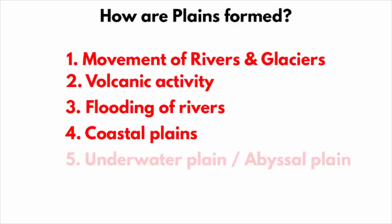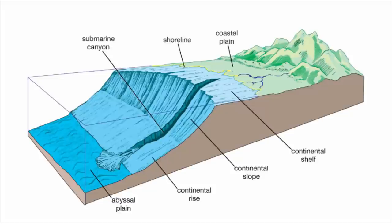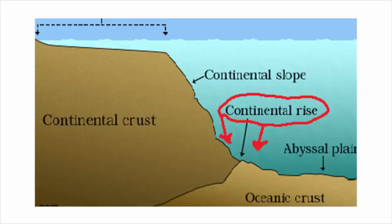And then there is something called underwater plains, which are also called abyssal plains. You will find them at the bottom of the ocean. These plains are 5,000 to 7,000 meters below sea level, and that is why these plains have not been thoroughly studied. But scientists say these underwater plains are among the flattest and smoothest places on Earth.